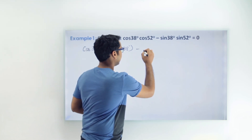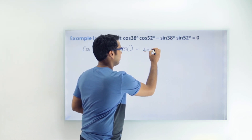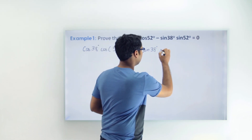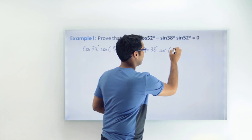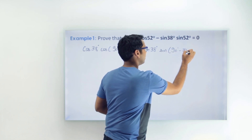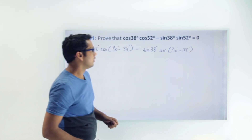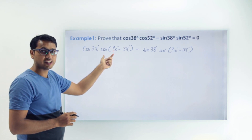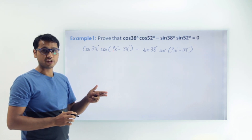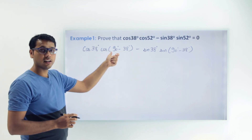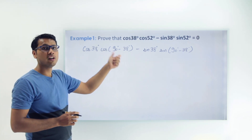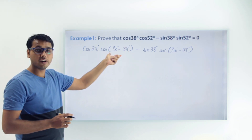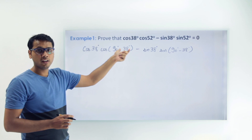So we can write cos(90° − 38°). Similarly, we'll do the same thing for sin(52) as well — this will be sin(38) and sin(52) becomes sin(90° − 38°). Now we can change cos(90° − 38°) into its complementary trigonometric function, which is sin, because the angle is written in the format of 90 minus that angle. So this will be converted into sin(38°).